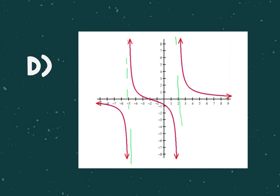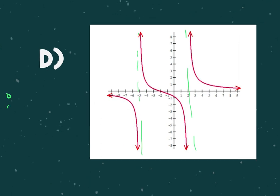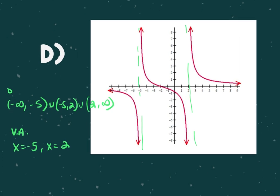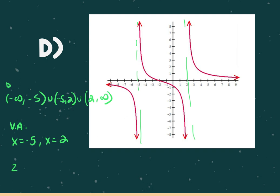Because there's a break in the graph, the domain is impacted: negative infinity to negative five, negative five to two, and two to positive infinity. That's also where your vertical asymptotes are: x equals negative five and x equals positive two. The zeros on this graph are at just negative two. There is a horizontal asymptote at y equals zero — you can see it's affecting the end behavior.